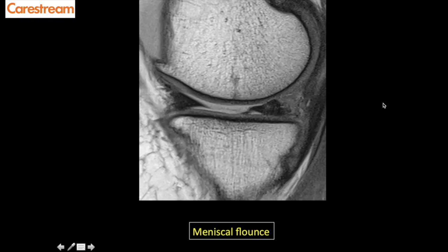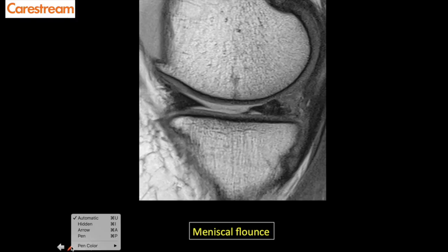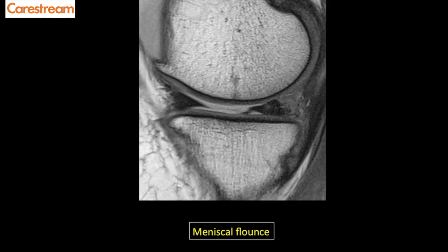The next meniscal variant is the meniscal flounce. This is a wavy appearance of the free margin — the apex — of the meniscus. Normally the apex is triangular, but in meniscal flounce there is a wavy appearance of the apex. This is normal and should not be labeled as a tear. It does not have significant clinical importance, but the key point is not to mistake it for a tear.